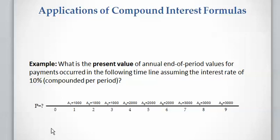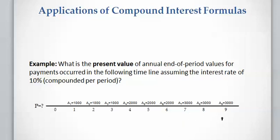As you can see, we are going to have three payments of one thousand dollars at the end of year one, year two, and year three; three payments of two thousand dollars at the end of year four, five, and six; and three payments of three thousand dollars at the end of year seven, eight, and nine.